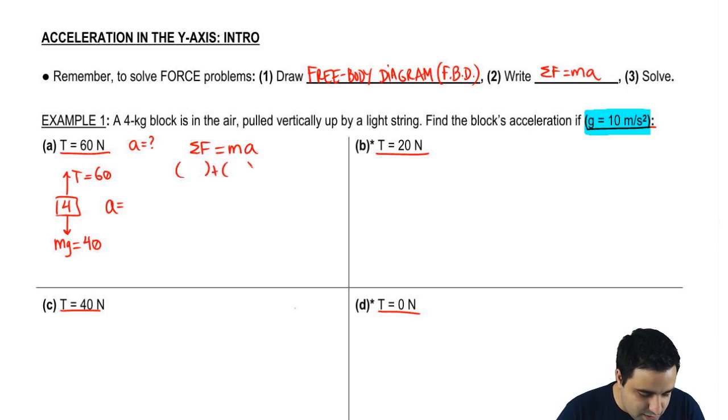There are two forces, so I'm going to do this. The mass is four, and the acceleration is what I'm looking for. So I'm going to find out this is a positive 60, because it's 60 going up, negative 40. So I get a positive 20 equals 4a, so a equals positive 5 meters per second squared.